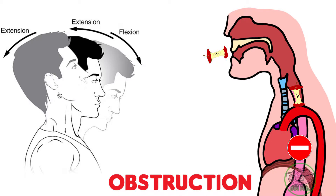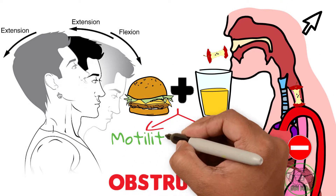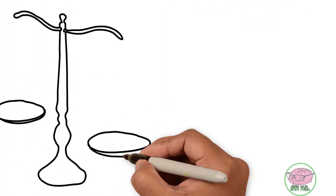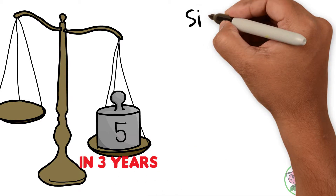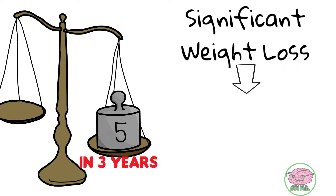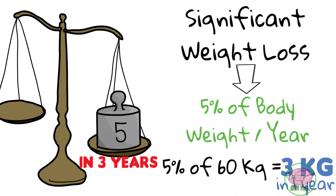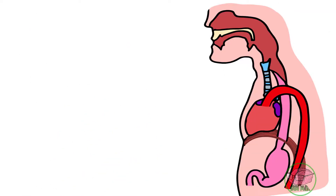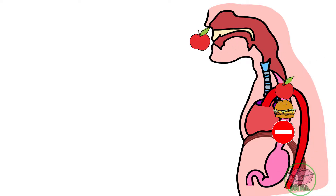Dysphagia to both solid and liquid foods can be due to two main causes: motility disorders, meaning a problem in the motion of the esophagus, or cancer, a growth within the walls of the esophagus. Besides, Juan also complains about weight loss. However, his weight loss is non-significant. In order for a weight loss to be significant, it must represent 5% of the total body weight — that is, 3 kilograms in one year. Our patient only has a 5 kilogram loss in 3 years. Nonetheless, this weight loss could be due to food getting stuck in the esophagus and not going down into the stomach for proper digestion.